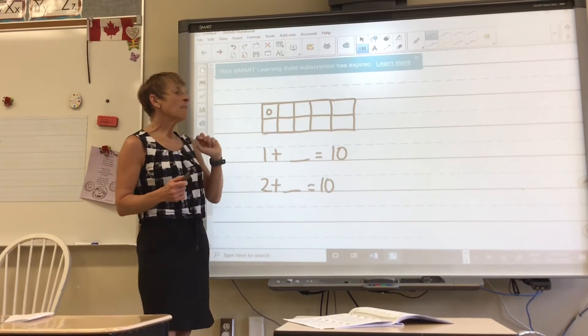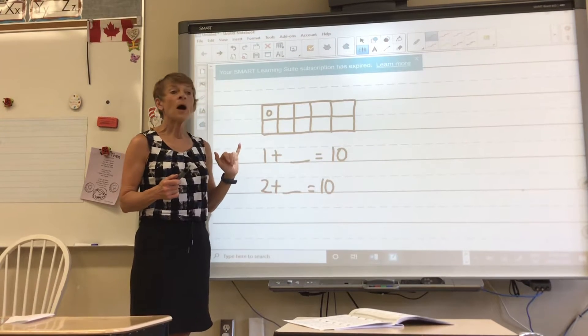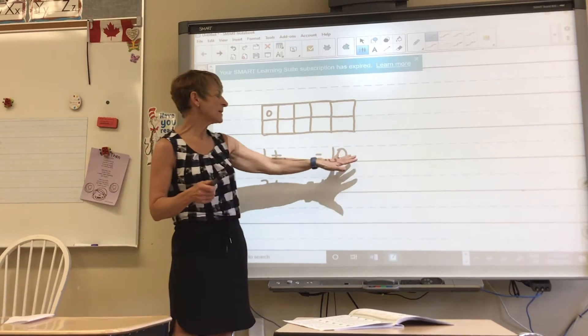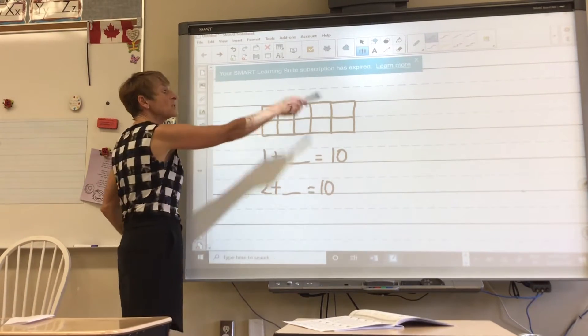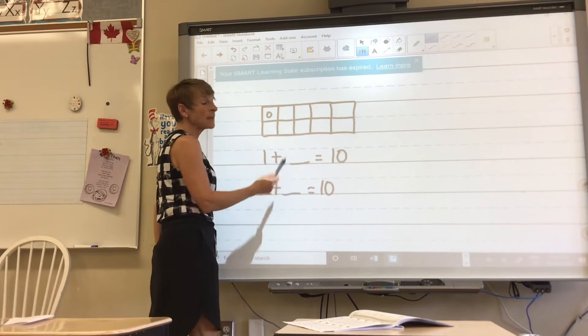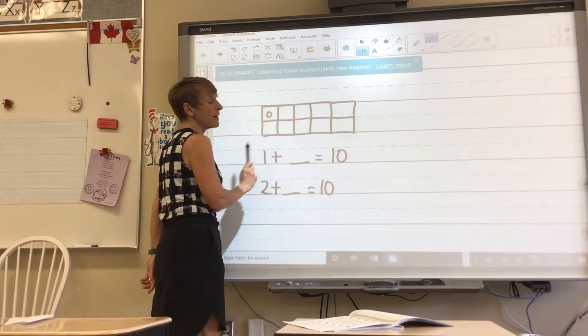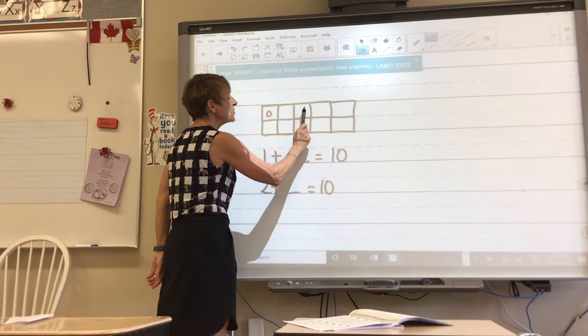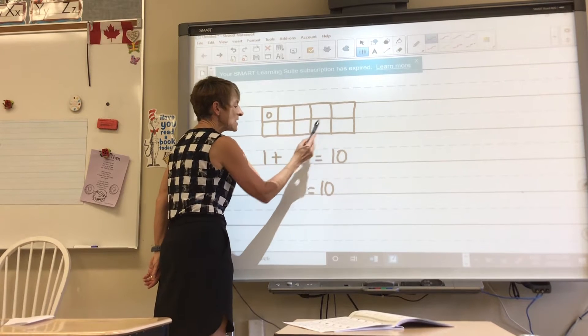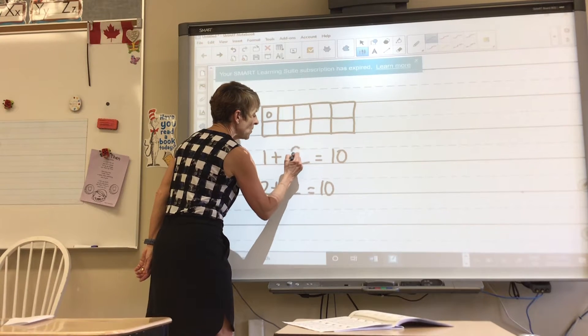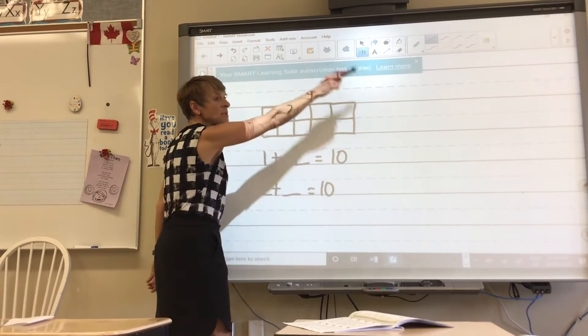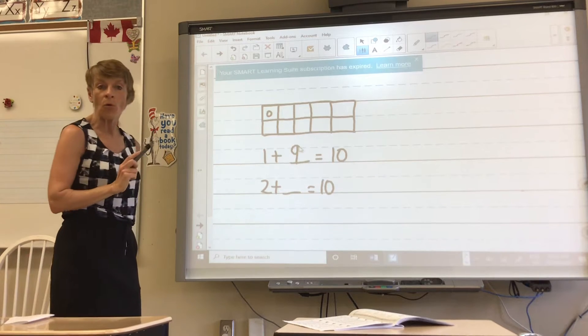So I have put one circle and I want to know how many it's going to take so that I have ten. We know there's ten all together. There's one here. Let's see, if we were to fill these in, how many circles would I have to draw? One, two, three, four, five, six, seven, eight, nine. So we know 1 plus 9 equals 10.